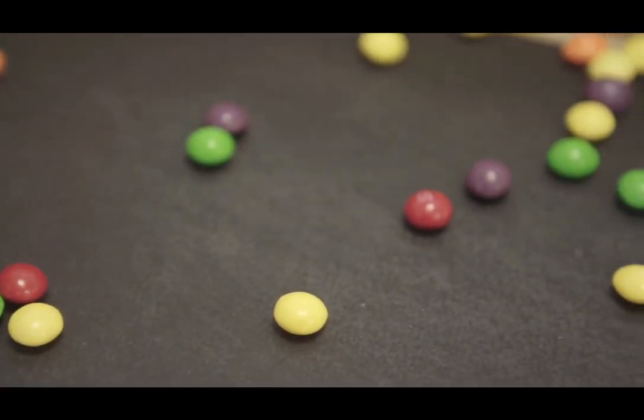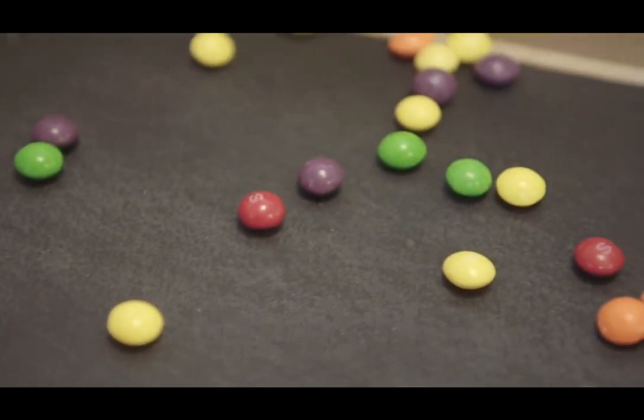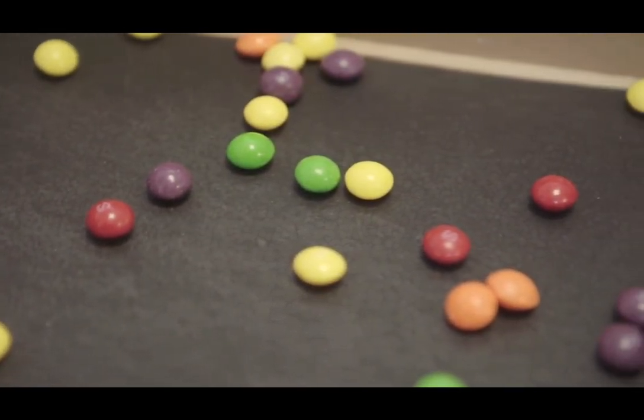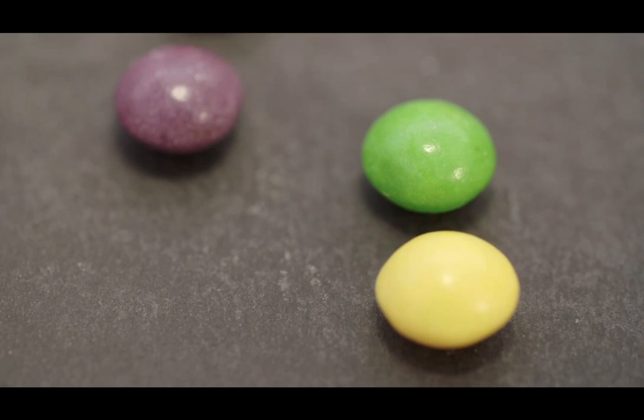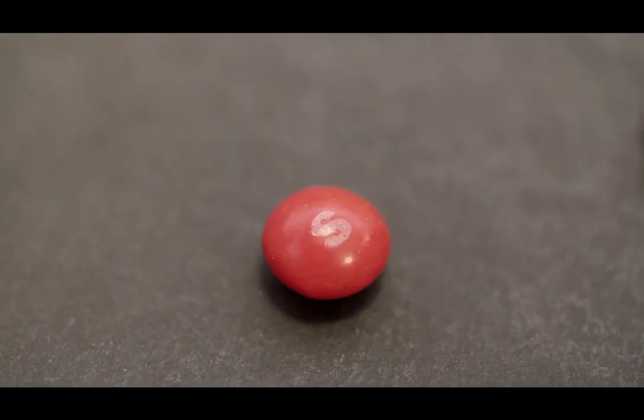Some of the sweets will land displaying their marking, while others will land with the blank side showing. In this model, sweets blank side up represent atoms that have emitted some radiation and have decayed. Those sweets that have landed marking side up have not decayed, so can still emit radiation.